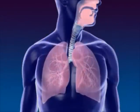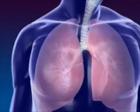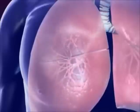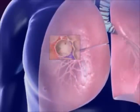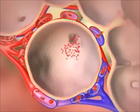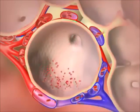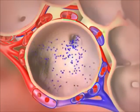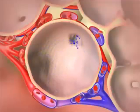Oxygenated air goes from the nose to the pharynx, larynx, trachea, bronchus, and alveoli. By the process of diffusion, oxygen in the air moves from the alveoli to the capillaries. Carbon dioxide moves from the capillaries to the alveoli and is exhaled. This process is called respiration.